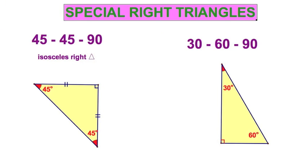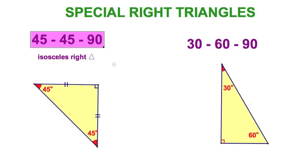Let's get started with these special right triangles. On the left, the 45-45-90, and over here, the 30-60-90.